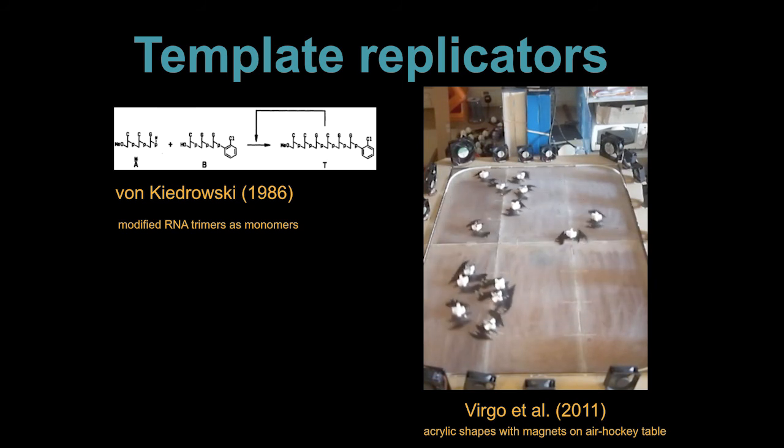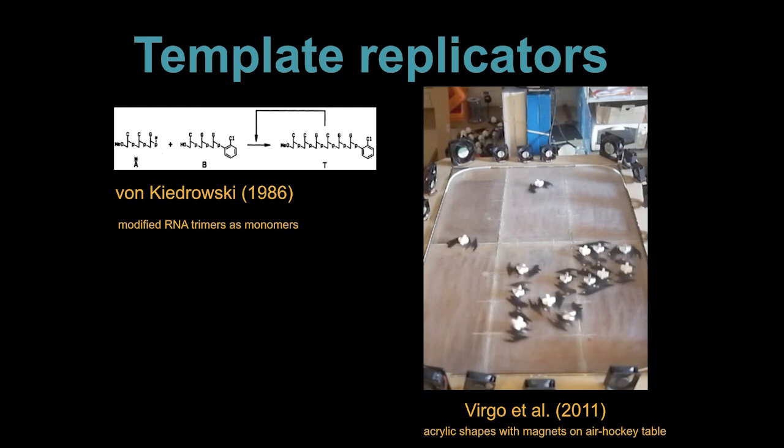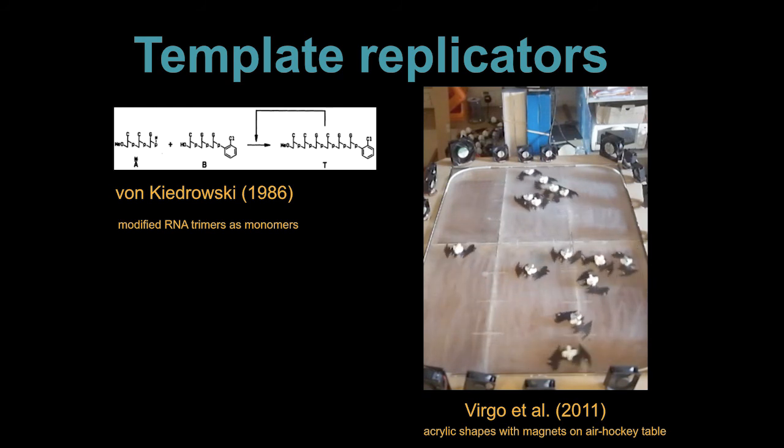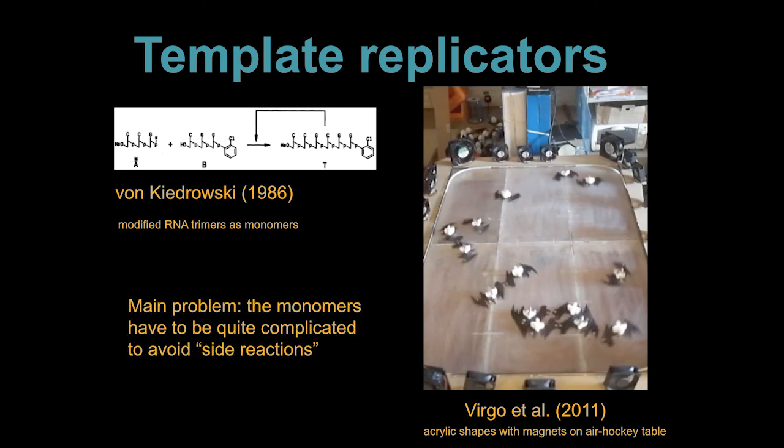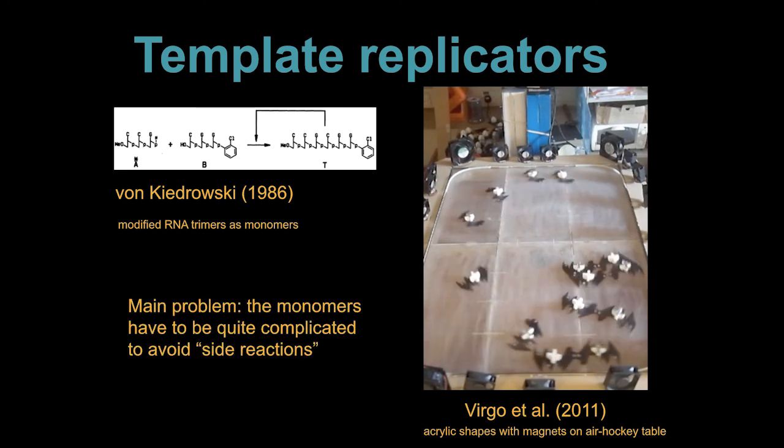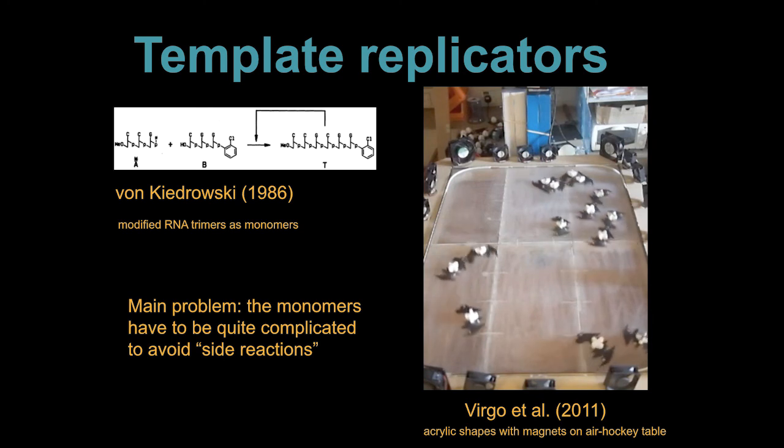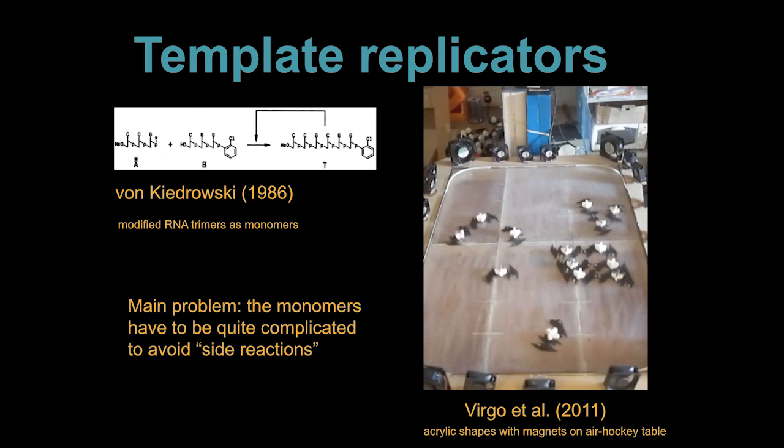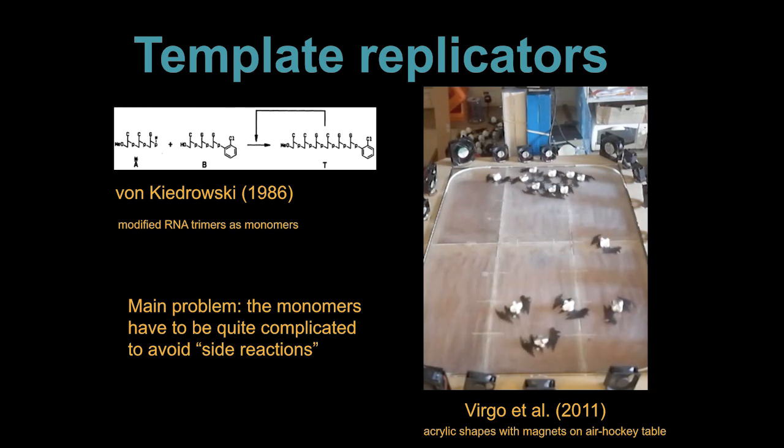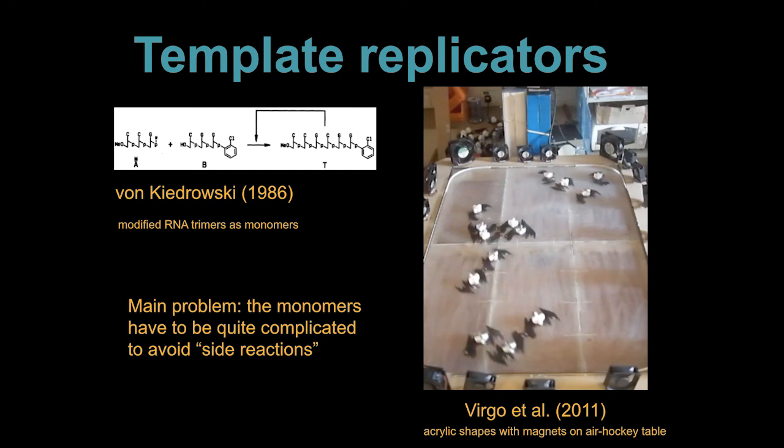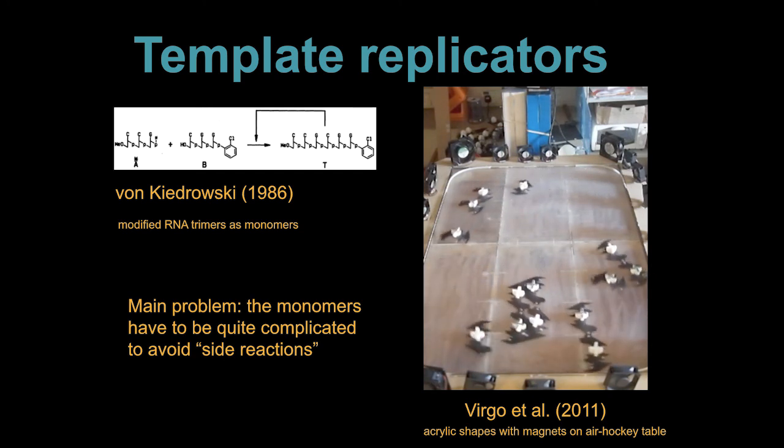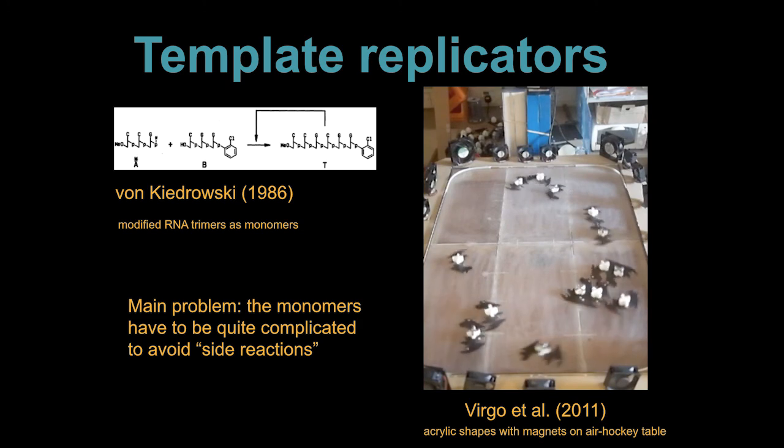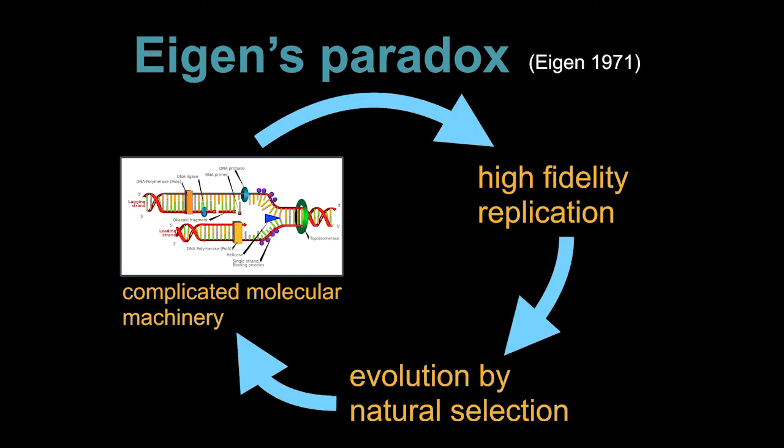The problem is that the monomers themselves have to be quite complicated. This is not because it's difficult to form the templated string, but rather it's because it's difficult to prevent the monomers from just spontaneously forming into random strings. If that happens, then all of the signal gets lost, and the fact that heredity occurred ends up not really mattering.